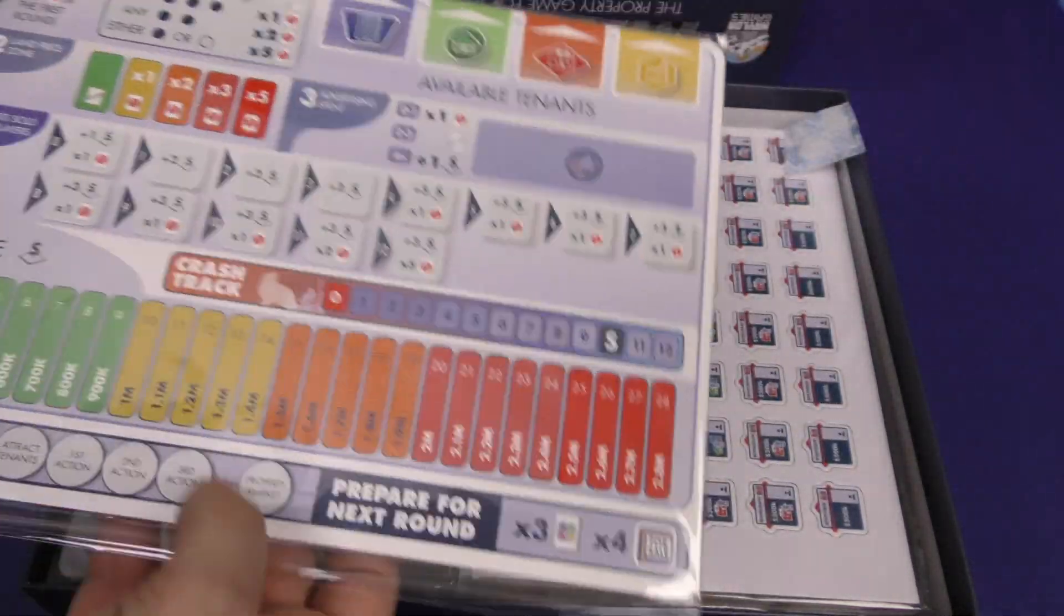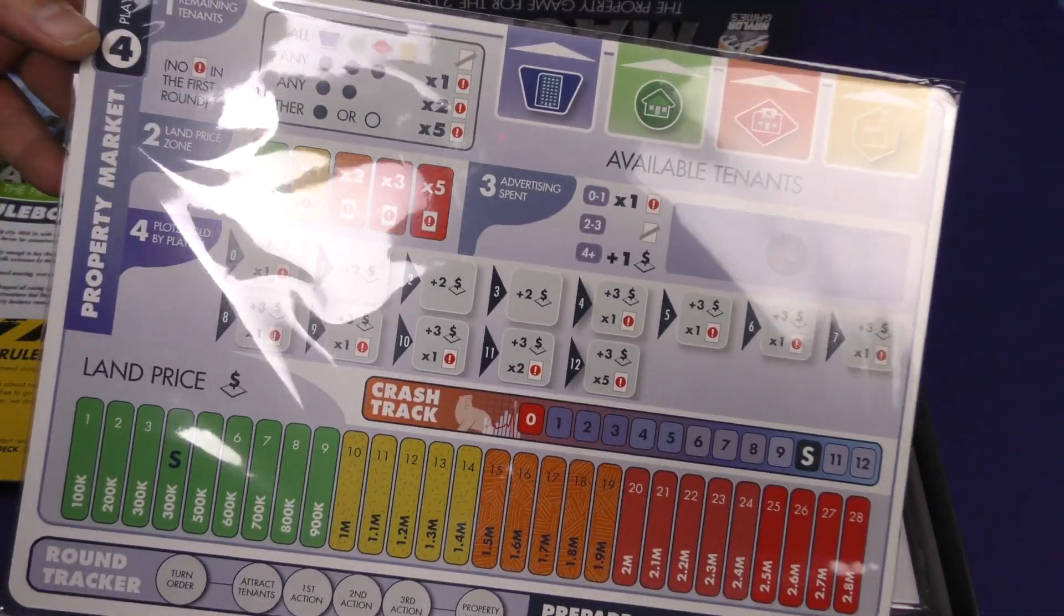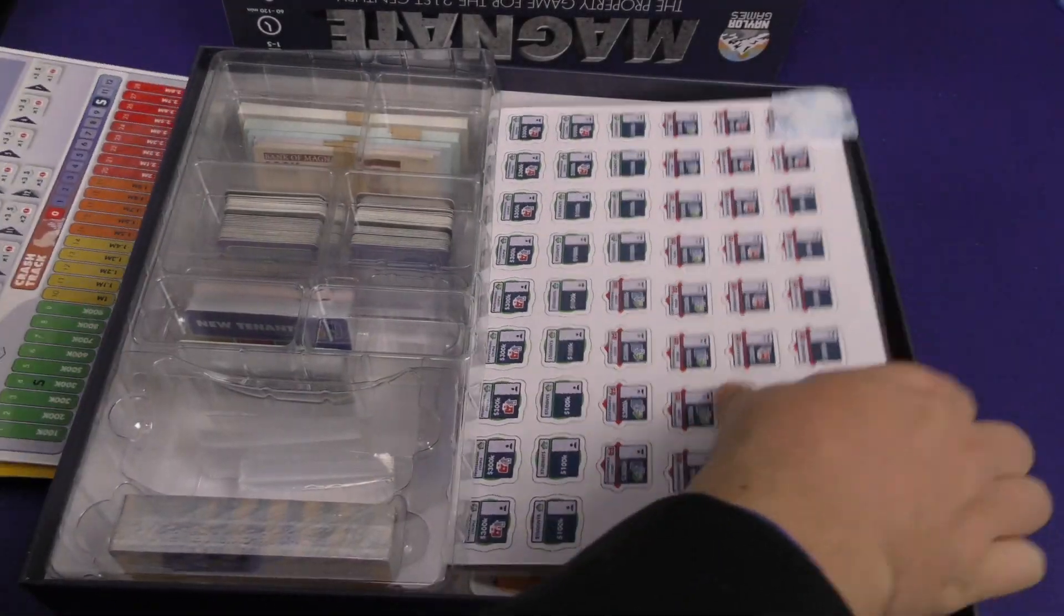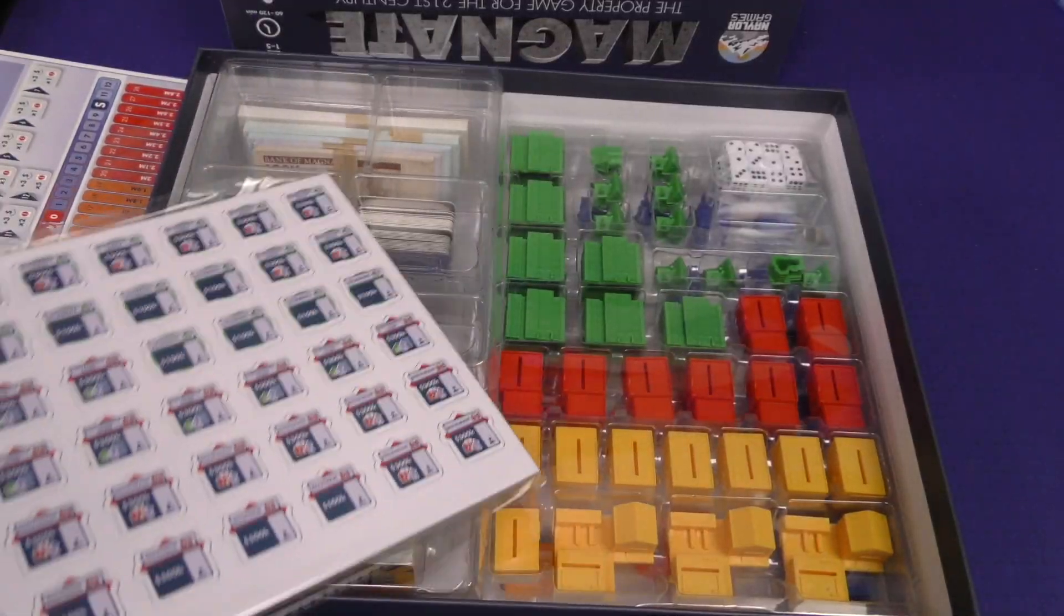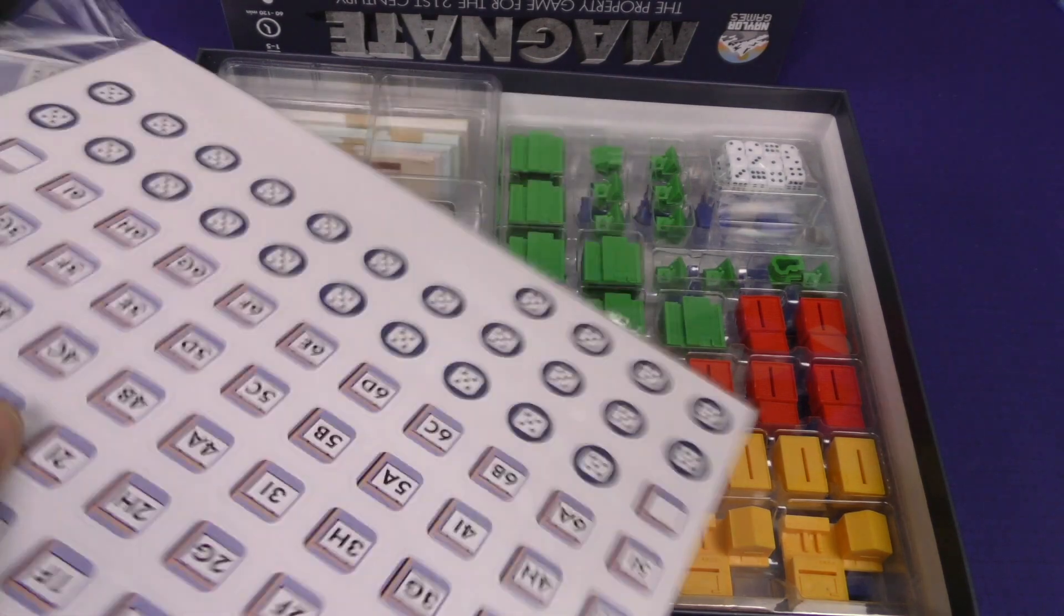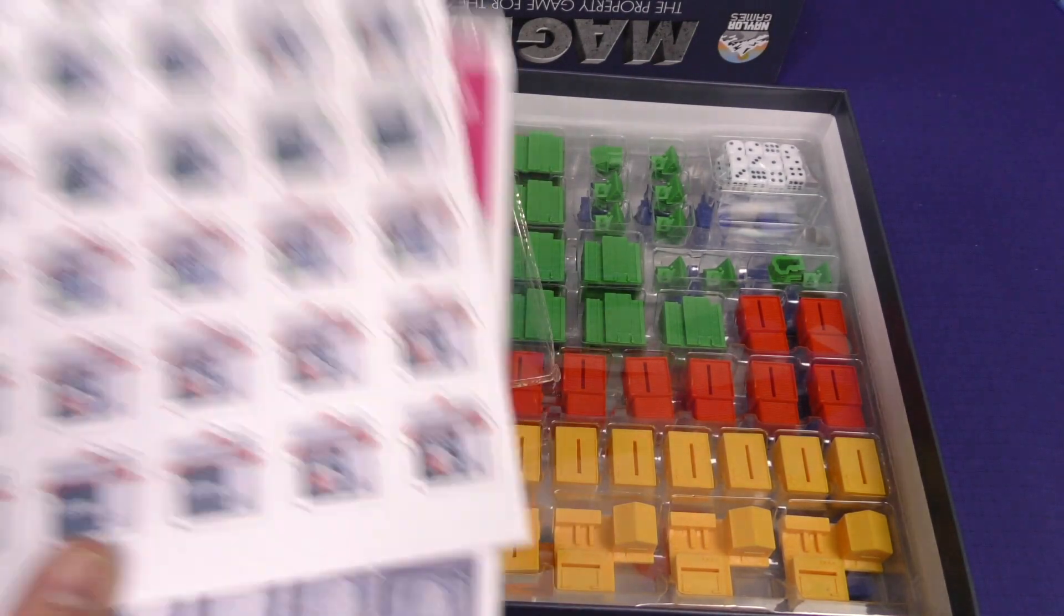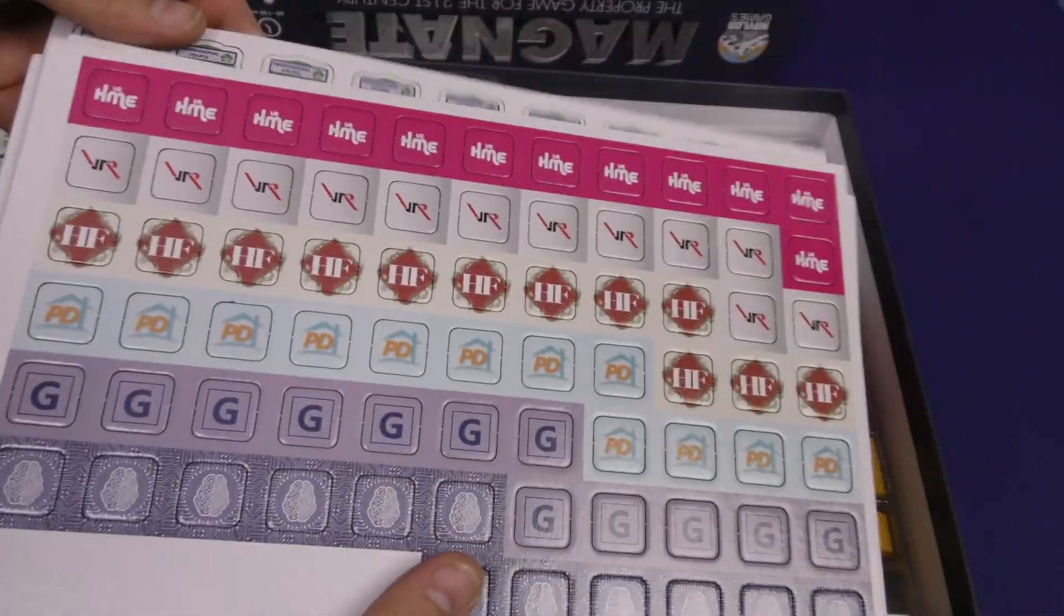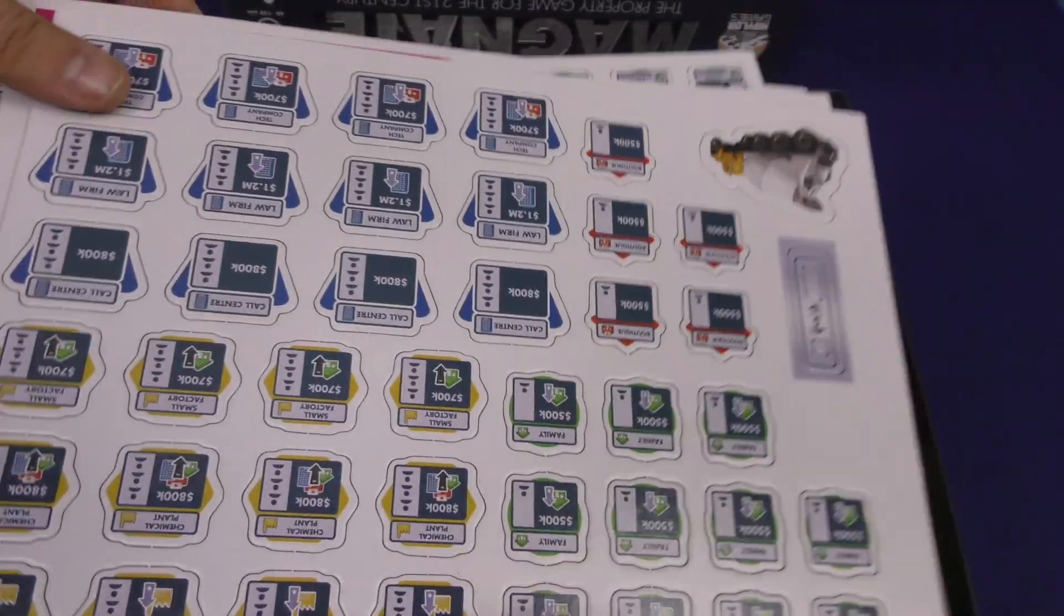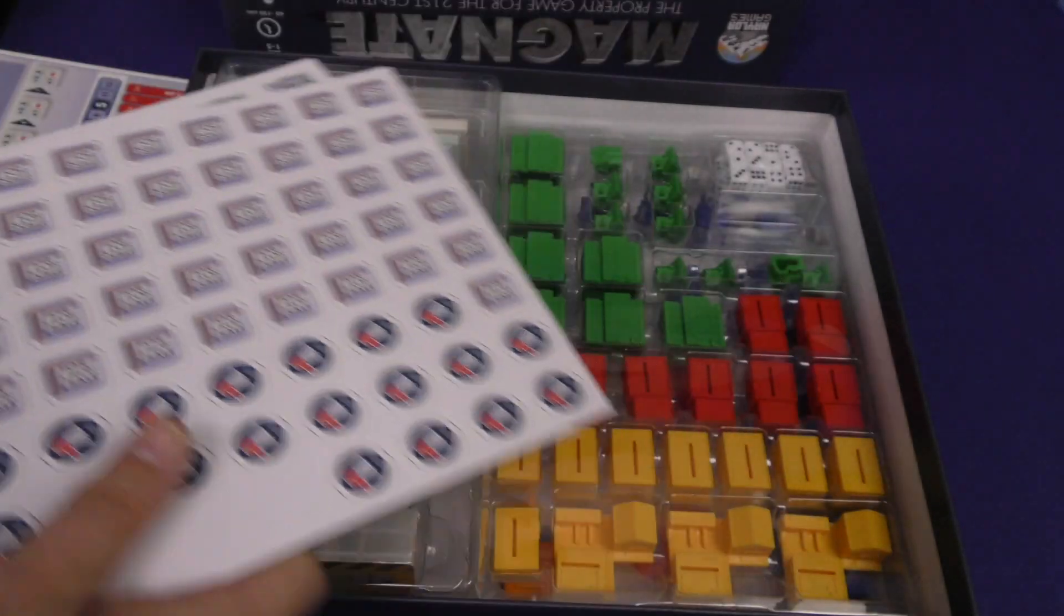AI property holdings. It's kind of a cool looking board. Some punch boards. Ooh, plastic. But we'll get to the plastic in a second. Let's take a look at the punch boards. Nice. These look cool. I don't know what they do.